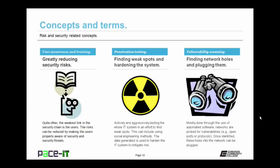Similar to penetration testing is vulnerability scanning — the finding of network holes and then plugging them. It's mostly done through the use of automated software. Networks are probed for vulnerabilities, such as open ports or unnecessary protocols. Once these have been identified, these holes into the network can be plugged. Remember, you need to have authorization to perform vulnerability scanning, or you may end up in an uncomfortable discussion with your security personnel.